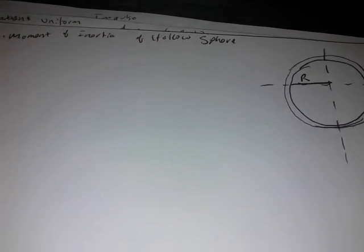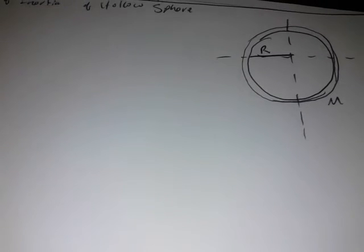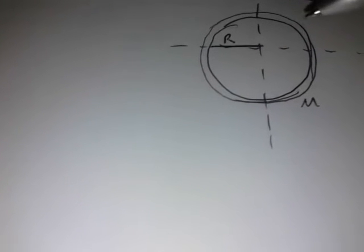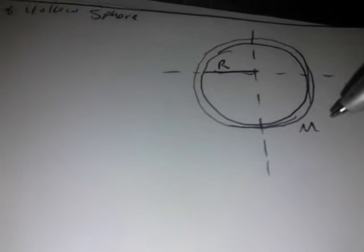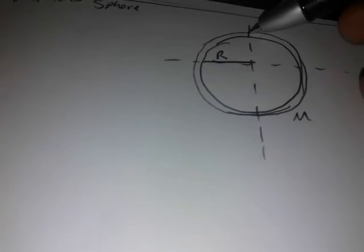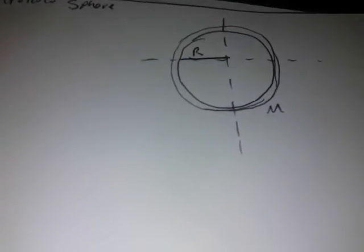We're going to be deriving the equation for the moment of inertia of a hollow sphere — a rigid body. To do this we need to write an equation for its mass. We have a hollow sphere with radius R and mass M. The approach is to consider an infinitely small strip and integrate from one side of the sphere to the other.